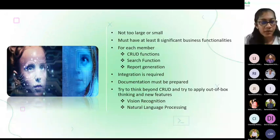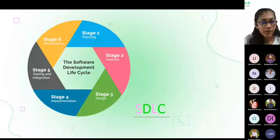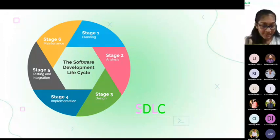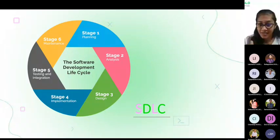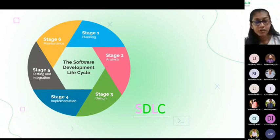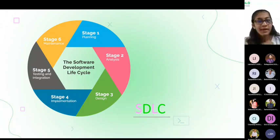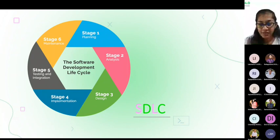Let's see how to apply the software development lifecycle to your project. You can follow planning, analysis, design, implementation, testing, and integration maintenance — those six steps applied to your project. You can apply the software development lifecycle because you have already learned those things in your SPA module and software engineering module. So you can apply it to your project because this is a good practice.